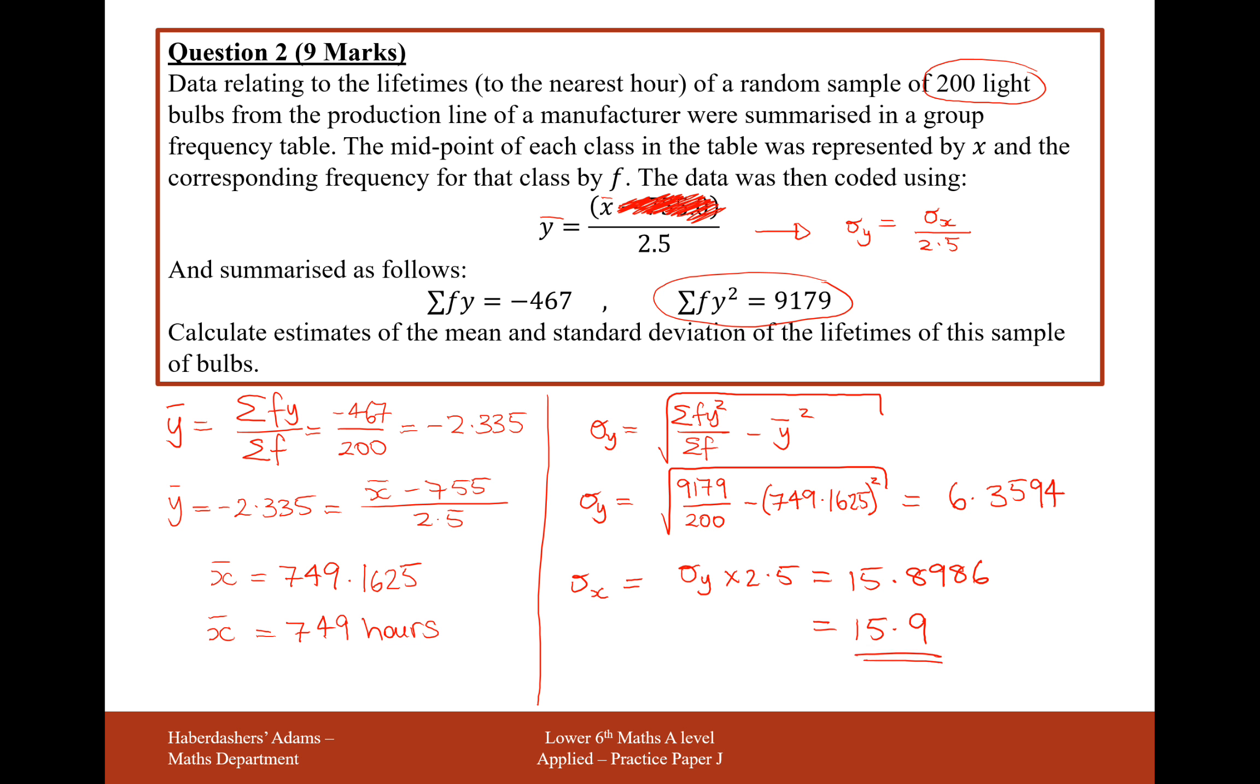So for each light bulb, the average amount of time that it's lit for is 749 hours, with a standard deviation, an average spread of our data, of 15.9 hours. That's nine marks for that question.